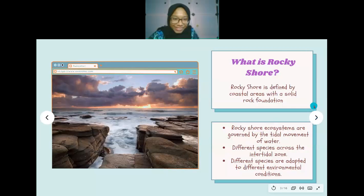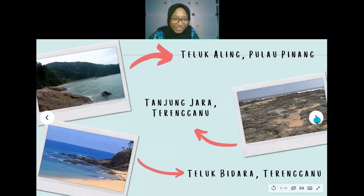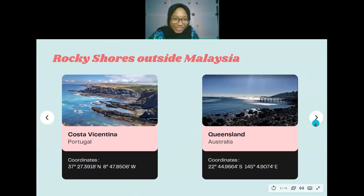Rocky Shores can be found all around the world. Examples in Malaysia include Teluk Aling in Pulau Pinang, Tanjung Jara in Terengganu, and Teluk Bidara in Terengganu. International examples include Costa Vicentina in Portugal and the coast along Queensland in Australia.